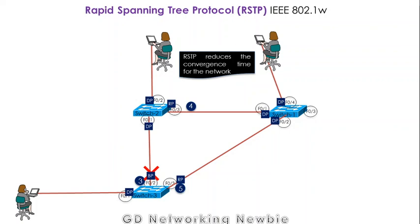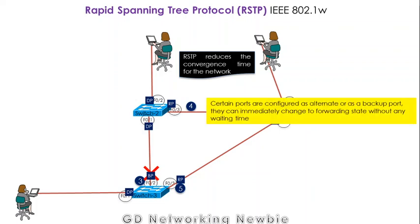Convergence time means that if any link in the network fails, then STP requires some time to recalculate everything — to find out the new root port and designated port. It takes some time and that time is known as convergence time. In RSTP, this convergence time has been reduced, meaning RSTP is faster.